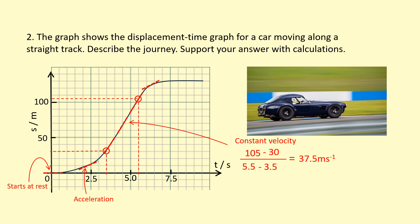After that you can see the steepness starts to decrease — the gradient is decreasing and eventually levels off. That means the car is decelerating, slowing down, and eventually reaches rest at a displacement of 130 meters from the start. The y-value there is 130 meters, meaning the car stopped and is not moving any further.